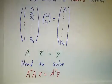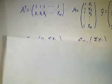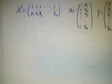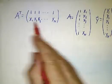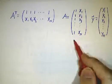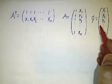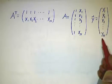We know the way to solve that is to solve A^T A c = A^T y. So let's go ahead and do that. A^T is the matrix whose rows are 1's and x's, A is the matrix whose columns are the 1's and the x's, and y is a column vector whose entries are the y's.